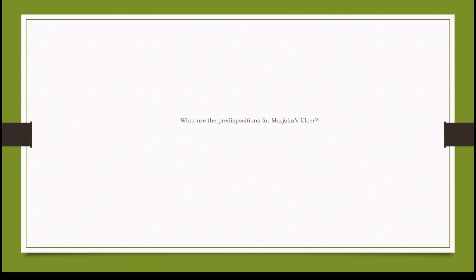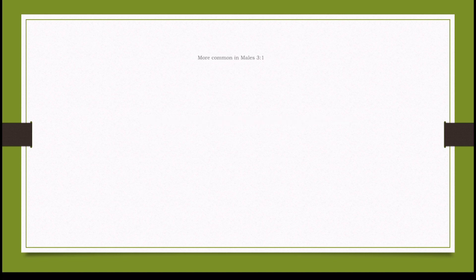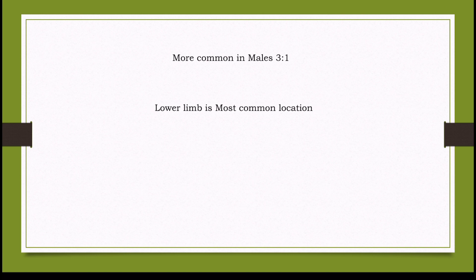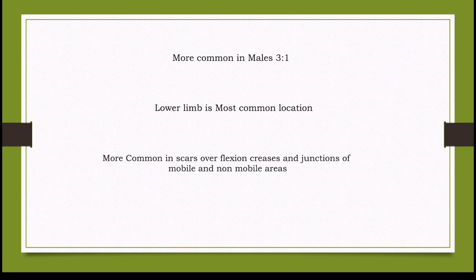Who is more predisposed to Marjolin's ulcer? Males outnumber females by about a 3:1 ratio. This could be due to genetic differences or a simple male bias for the predisposing conditions. The commonest regions of the body involved are the lower limbs and flexion creases, where repeated traction prevents timely healing.